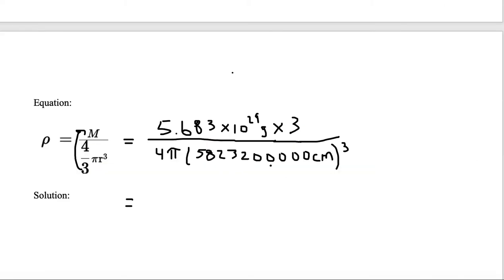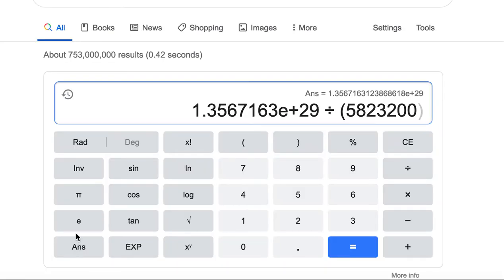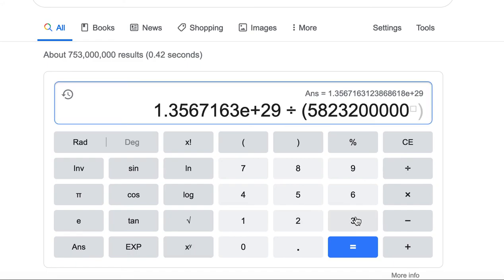5,823,200,000. And we close parentheses. Oh, we need to cube it first. X to the Y cubed. Then we close parentheses.